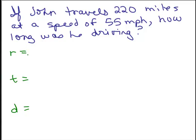So do we know the rate? Well, speed of 55 miles per hour - speed is the same as rate, so we've got 55 miles per hour. Do we know the time? Actually no, because it says how long was he driving. And what about the distance? Well, it says he's going 220 miles.